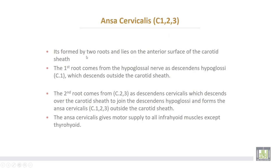The ansa cervicalis is formed by two roots and lies on the anterior surface of the carotid sheath. The first root arises from the first cervical nerve and travels through the hypoglossal nerve as the descending hypoglossal, which descends outside the carotid sheath. The second root comes from cervical two and three as the descending cervicalis, which descends over the carotid sheath to join the descending hypoglossal and form the ansa cervicalis. The root value of the ansa cervicalis is therefore cervical one, two, and three, and it lies outside the carotid sheath.